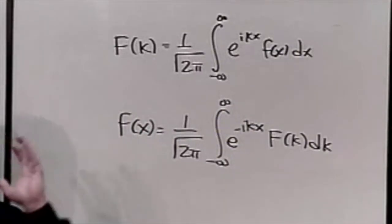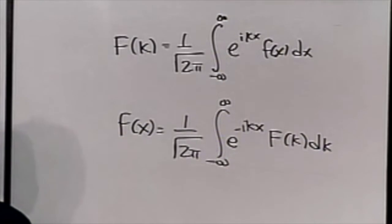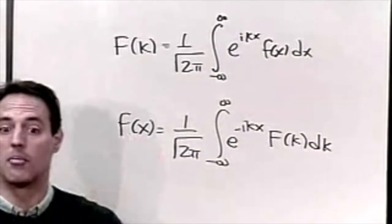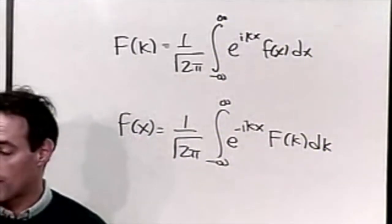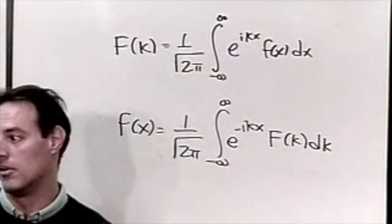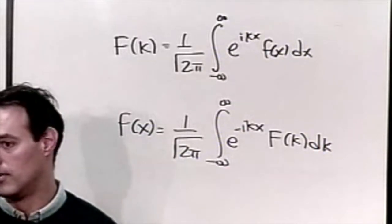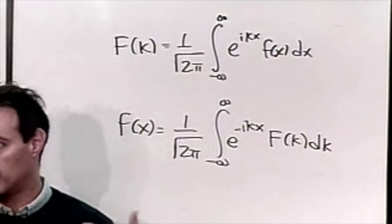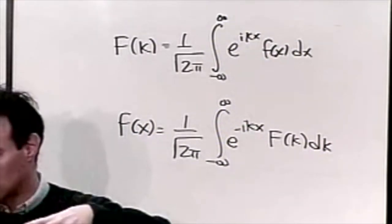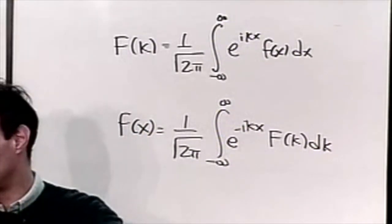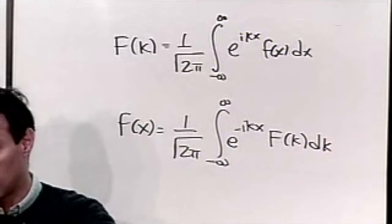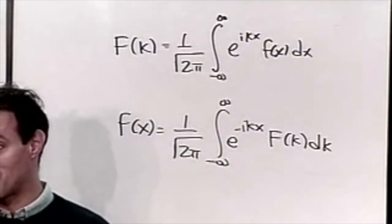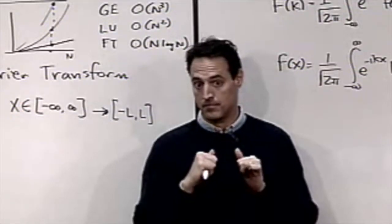Here's the idea: take your problem, apply the integral transform, get a new problem. If that new problem is simple and you can solve it, then all you have to do is transform back. You take your problem, you Fourier transform it, get a new problem, solve it, and then inverse transform to get the solution.